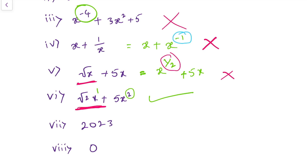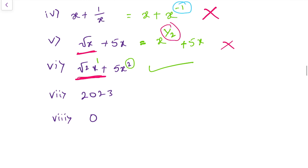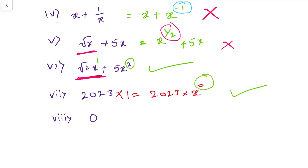From the first question, we are checking only for the alphabets. What about a number? In the first question, number 6 is there; here 1 is there; here 5 is there. Whether a constant is a polynomial or not: 2023 can be written as 2023 into x power 0, since any number to the power 0 is 1. Here, power is 0. Zero is a whole number, so this is a polynomial.